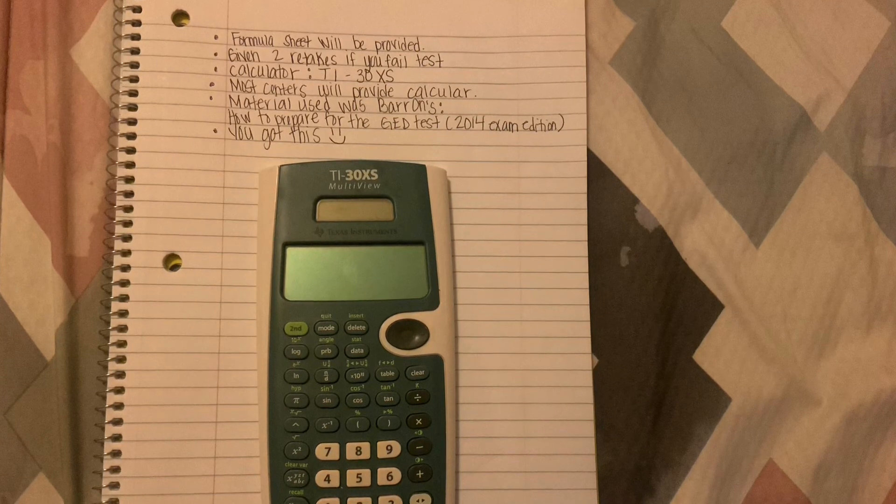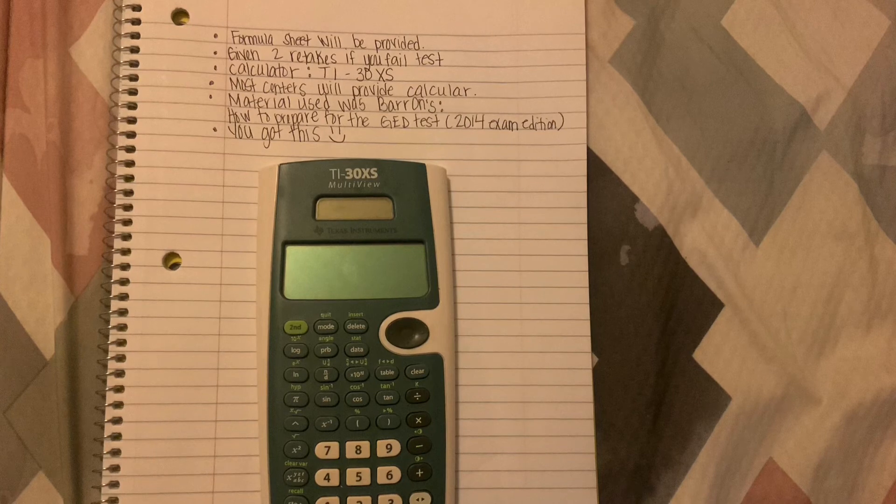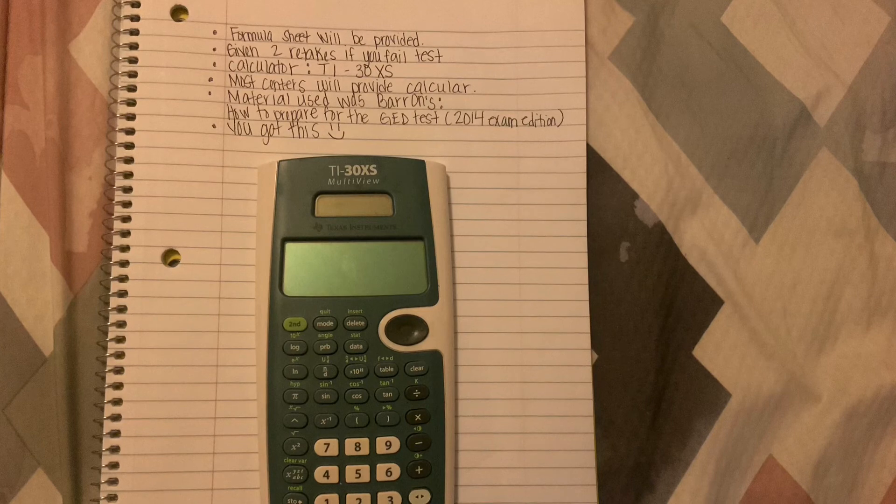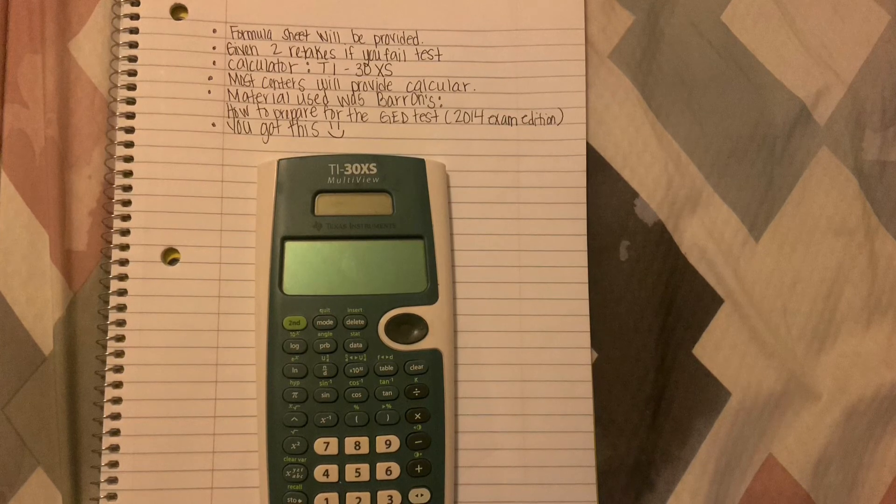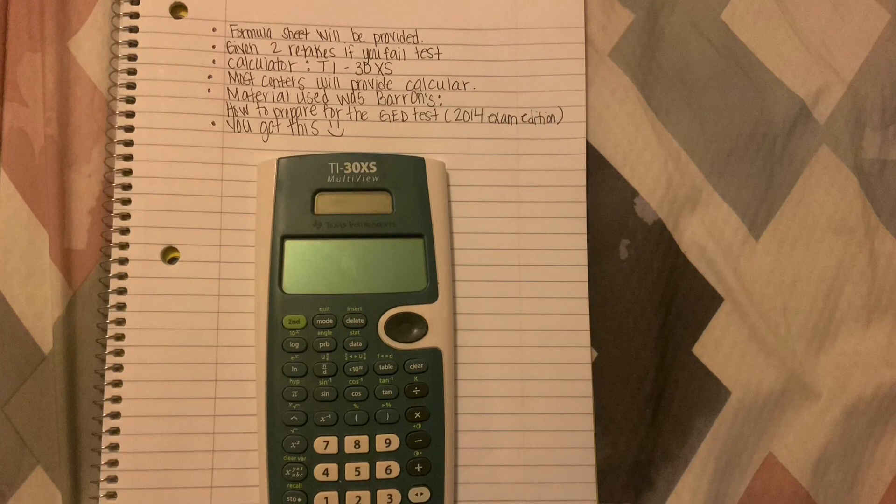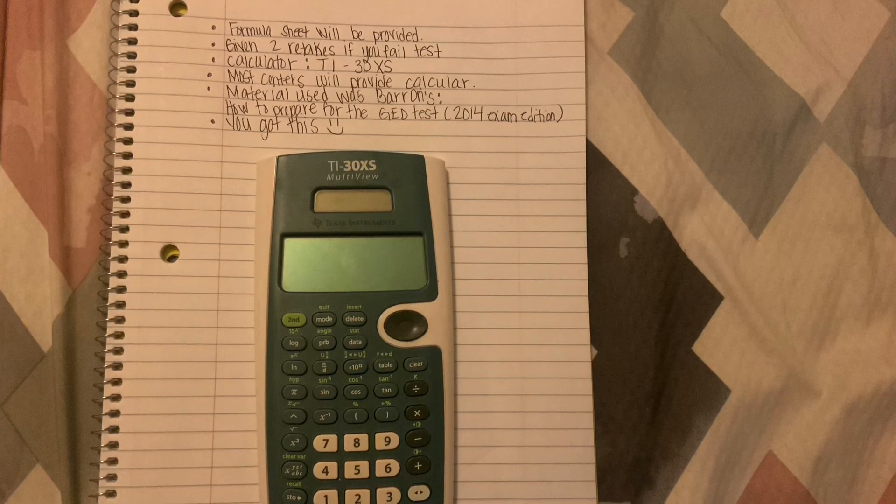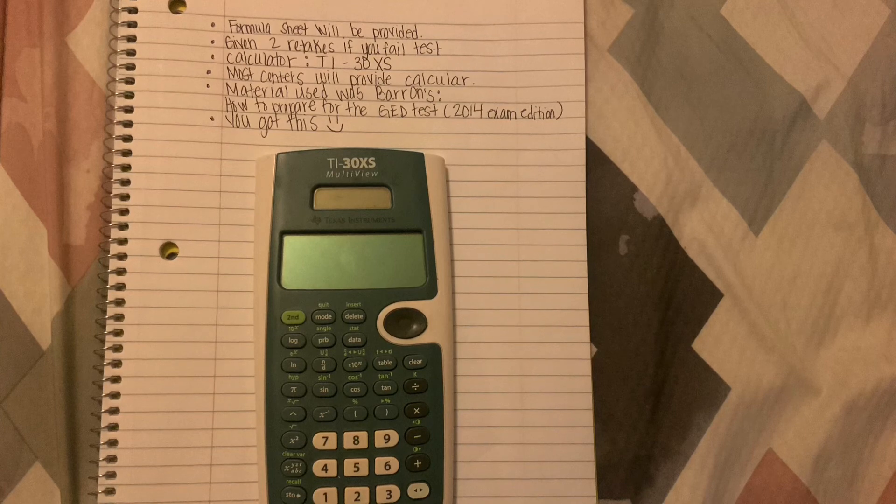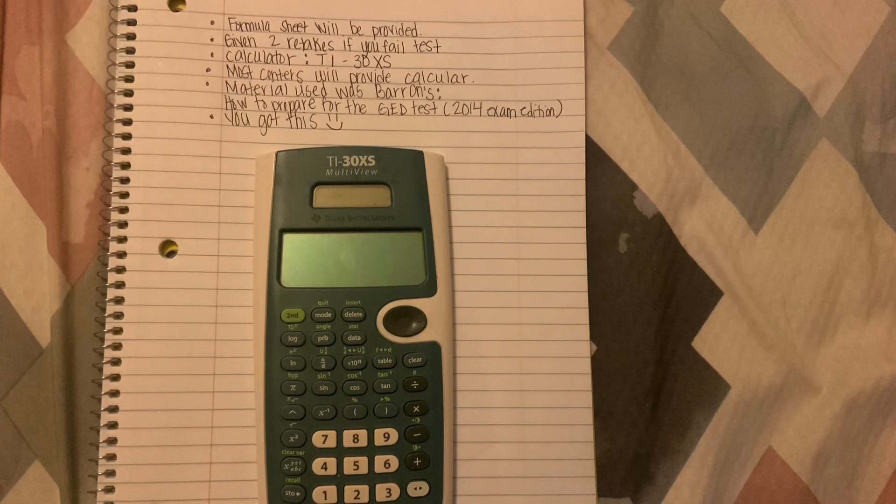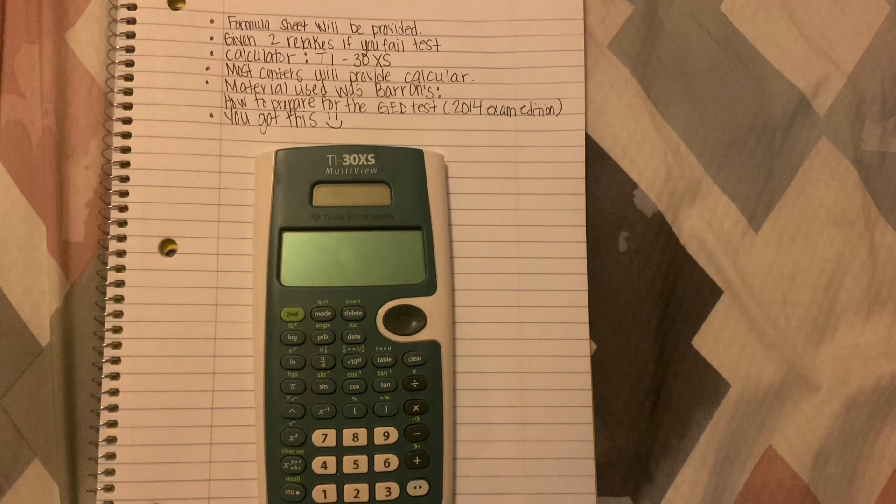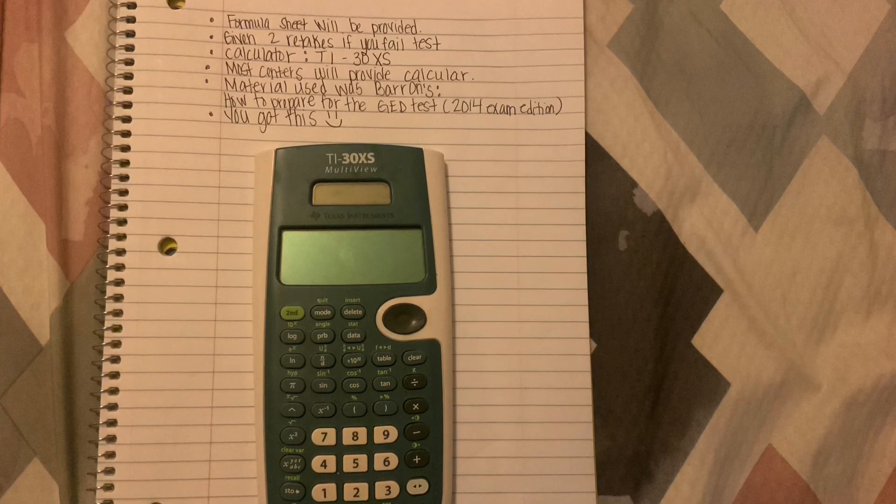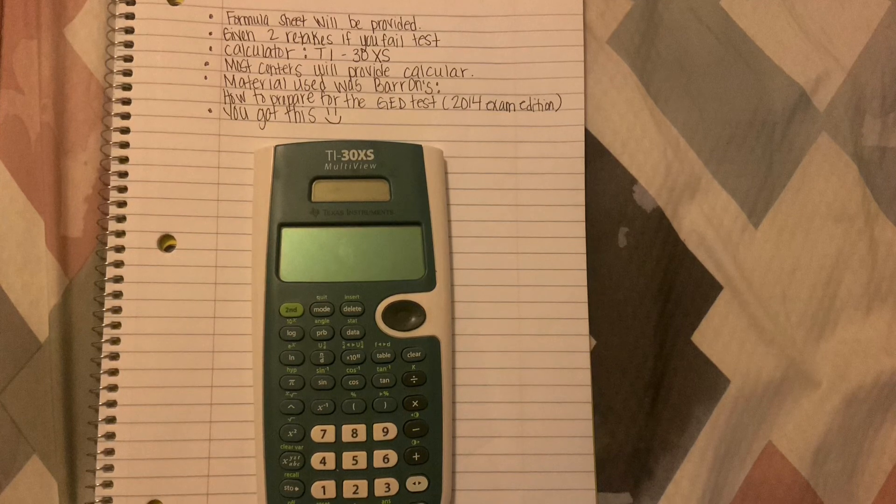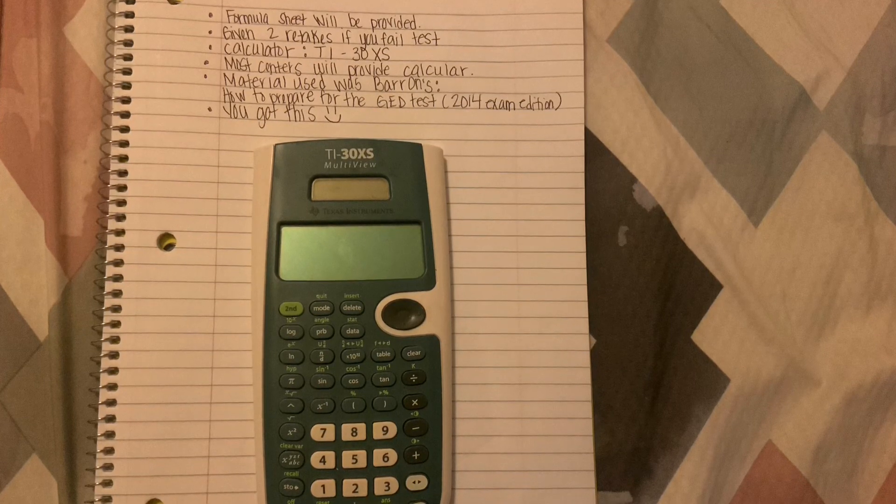I want to let you know that the formula sheet will be provided so you do not have to worry about remembering any of the formulas. You are given two retakes if you fail the test, which means the first time you take the test, let's say you fail, you get another time to take it. If you fail that test you get another time to take it, so you get a total of three times. If you fail the test after that third time, I believe they give you like a 60 day period of preparing for the test.